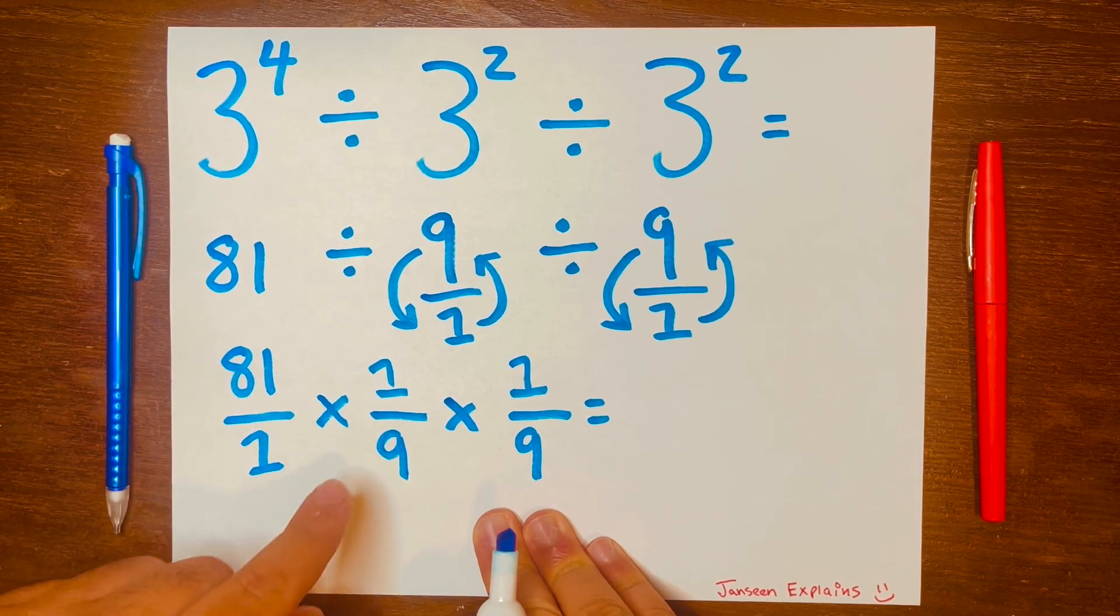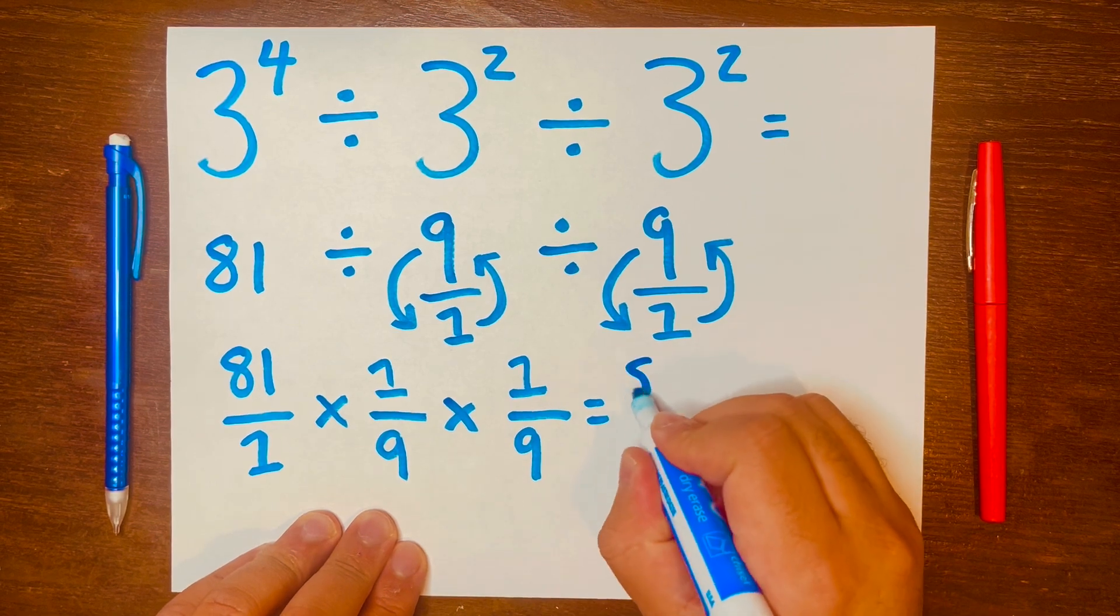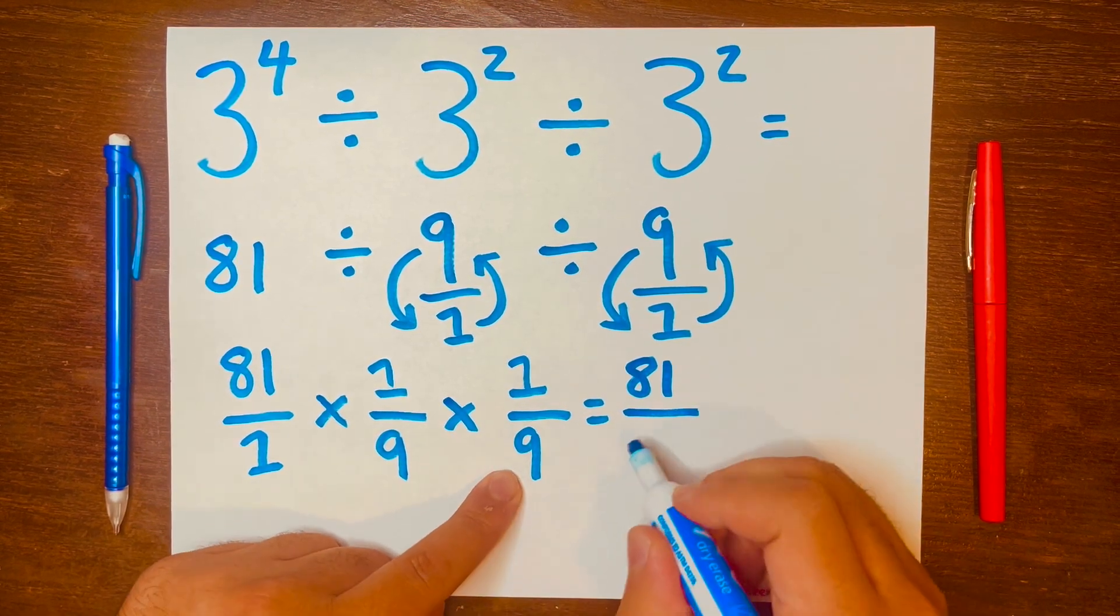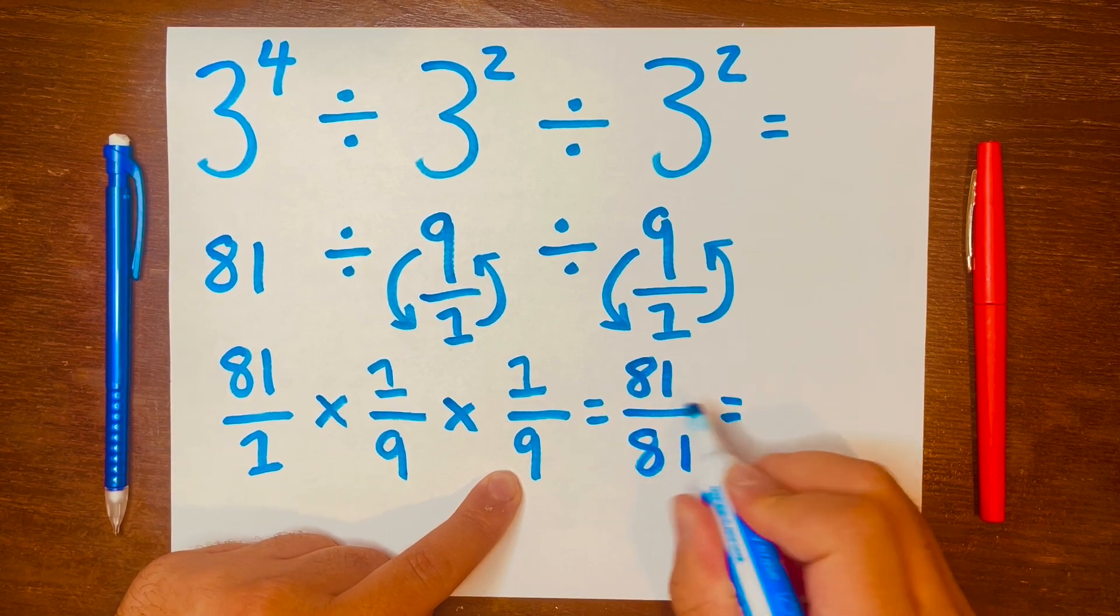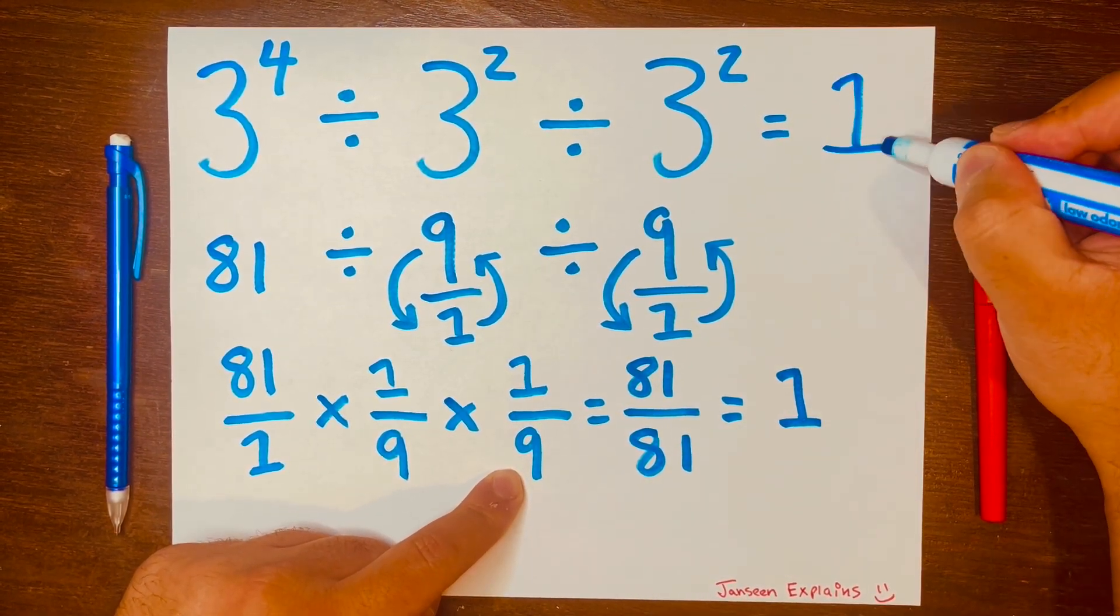So all we have to do now is multiply across. So 81 times one times one is 81. One times nine is nine, times nine is 81. And 81 divided by 81 is one. So your answer is one, and there you go.